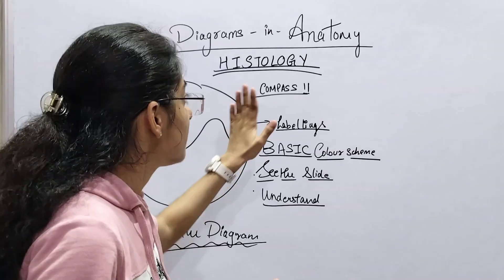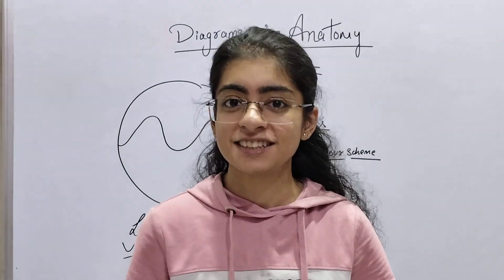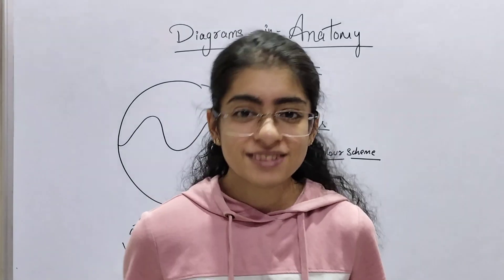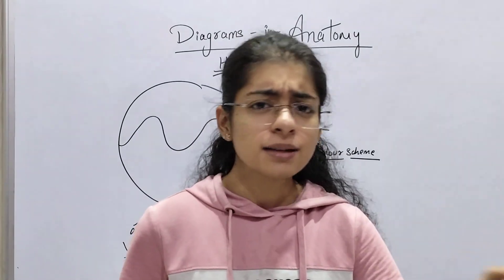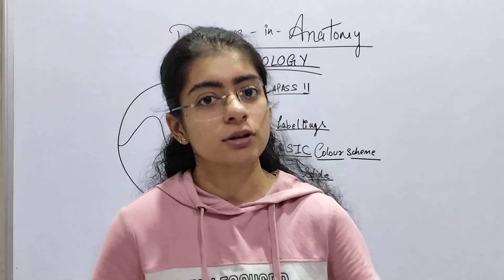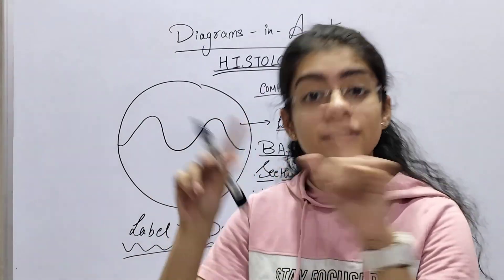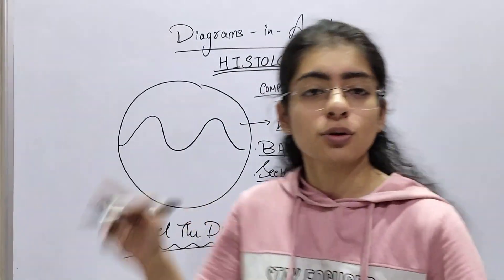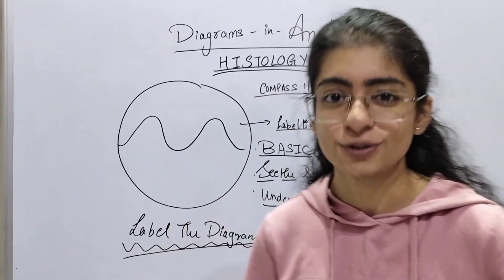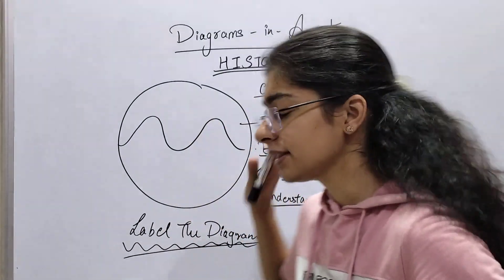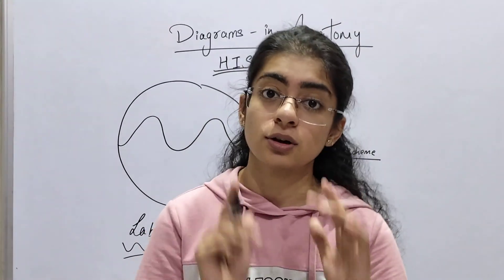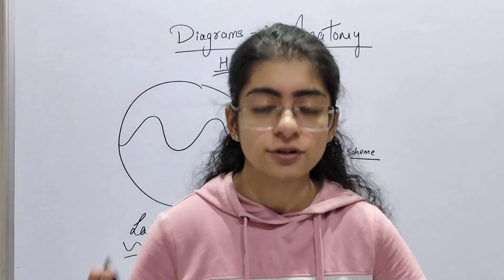For the boundary, always draw a circle — never make the mistake of drawing a square. A few diagrams are exceptions, but preferably always draw with a compass, as that is the universal rule. Don't draw the circle by hand because that doesn't look good.